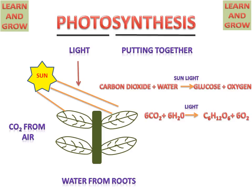Oxygen is liberated to the atmosphere and the final product is glucose. Plants make their own food by the help of the photosynthesis reaction.